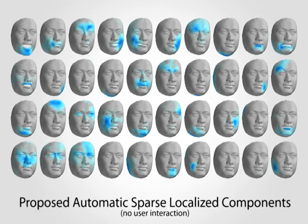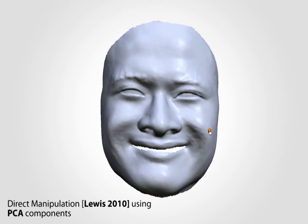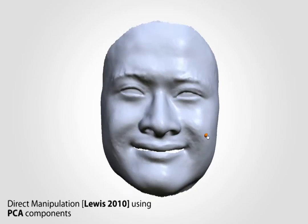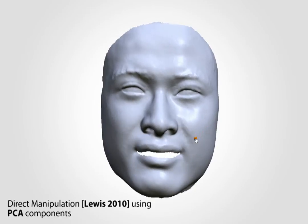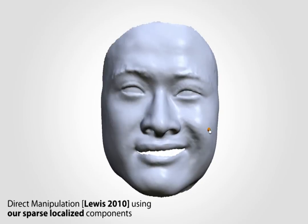This can be extremely useful in a variety of mesh processing and editing applications. Here we show direct manipulation using control points. With PCA components, the eyes are deforming even though the control point is on the cheek.